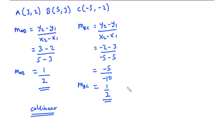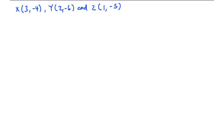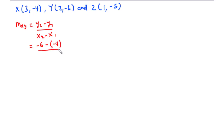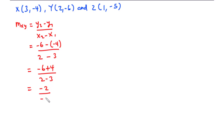Now let's solve another example. For the second example, we will check whether three points X, Y, and Z are collinear or not. Finding the gradient of the line joining X and Y: m equals y2 minus y1 over x2 minus x1. y2 is negative 6, y1 is negative 4, x2 is 2, and x1 is 3. So negative 6 plus 4 divided by 2 minus 3 gives negative 2 over negative 1, which equals 2. That is the gradient of the line joining X and Y.